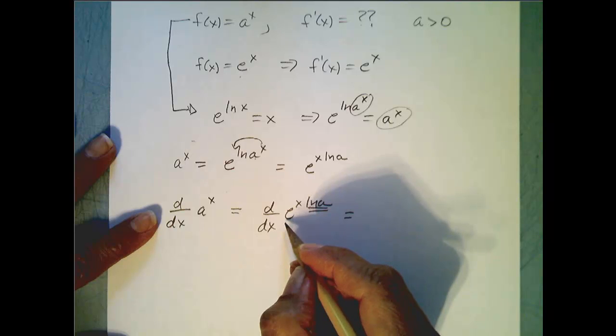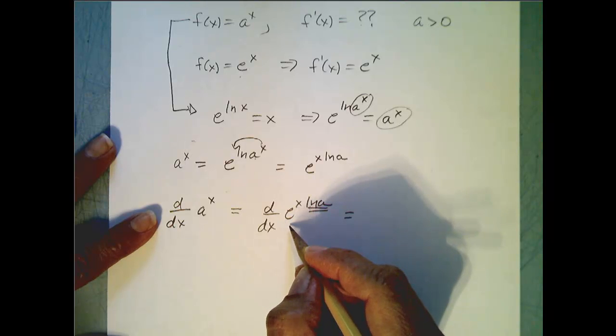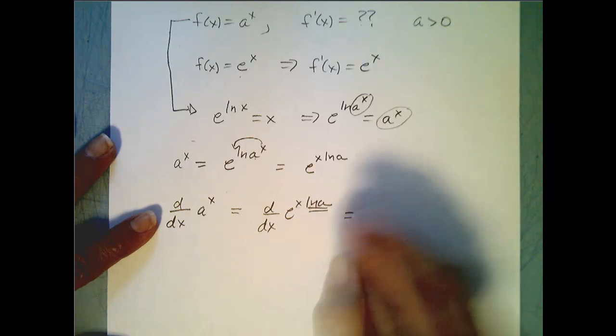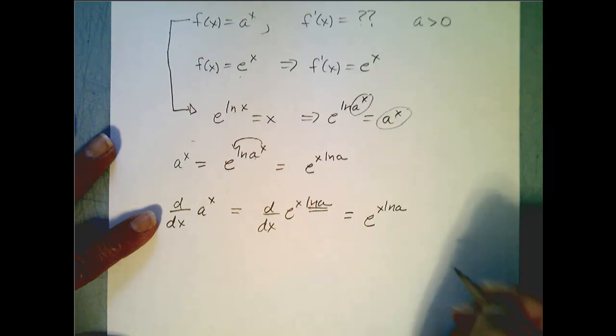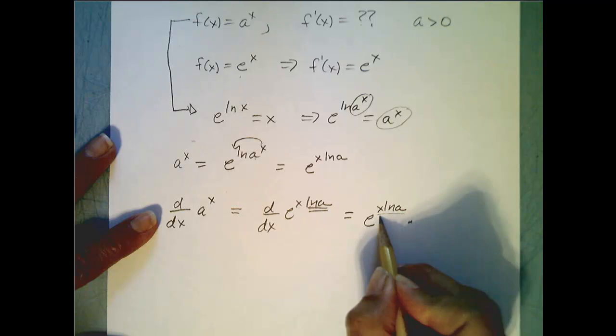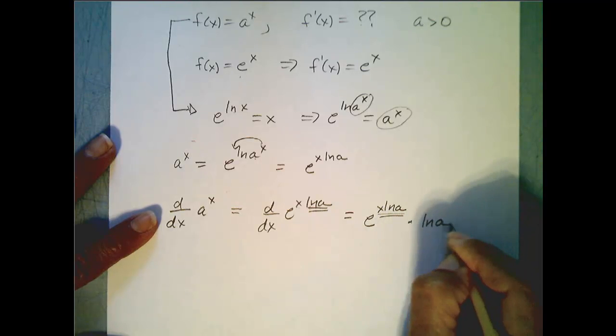Remember, the derivative of e to the u is e to the u times the derivative of u. So here it is e to the x ln of a times the derivative of this piece right here, which is just ln of a.